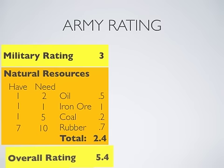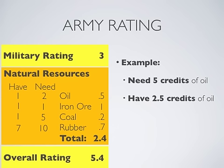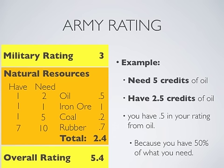The Natural Resources Rating is a number between one to four. Each country knows how much of each resource it can acquire to have a full rating point for that resource. The four resources are Oil, Iron, Coal, and Rubber. Once you have one full credit of each, you cannot get any more points for that resource — no matter how much you acquire, it will stay the same. You add your Natural Resources Rating and your Military Rating to determine your Armed Forces Rating.